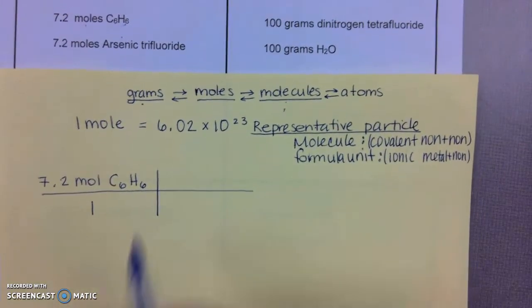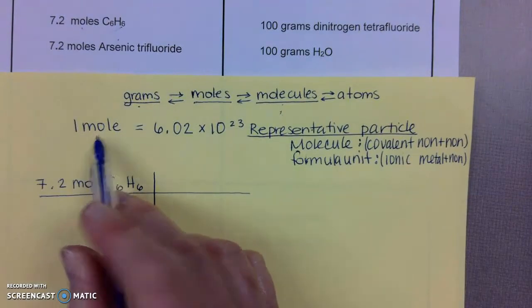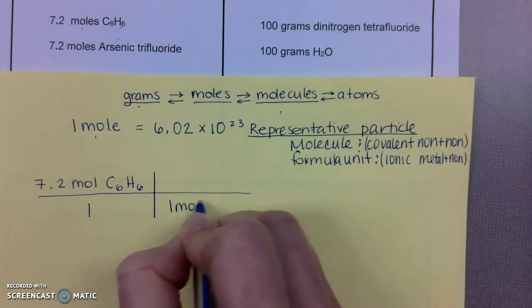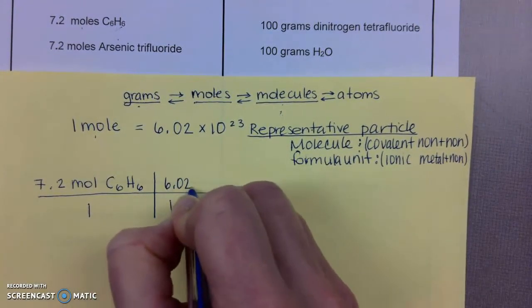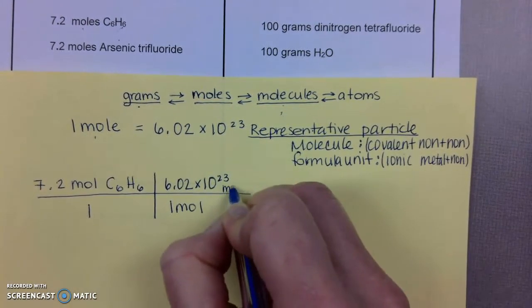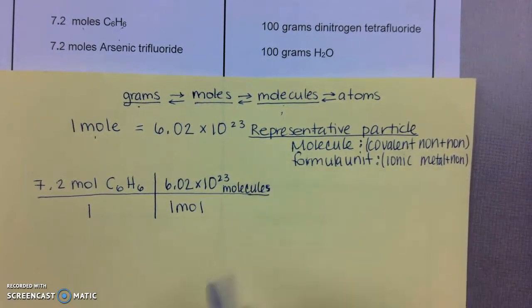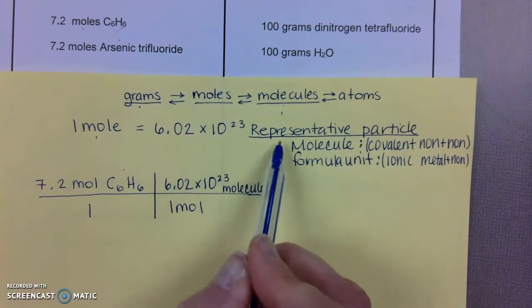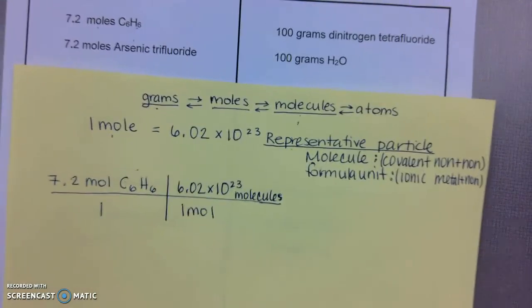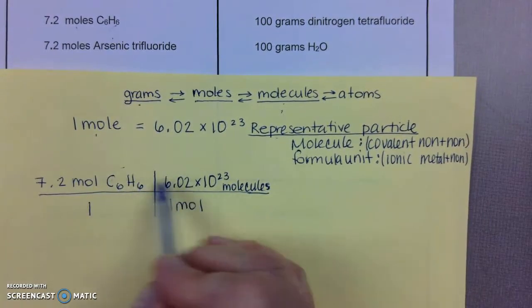Dimensional analysis, they want you to make sure that you have the unit across from each other so you can cancel out. We know this is 1 mole equal to 6.02 times 10 to the 23rd. I'm now going to write the word molecule because I know that this formula is a molecule. So I'm not going to generically write the word representative particle.